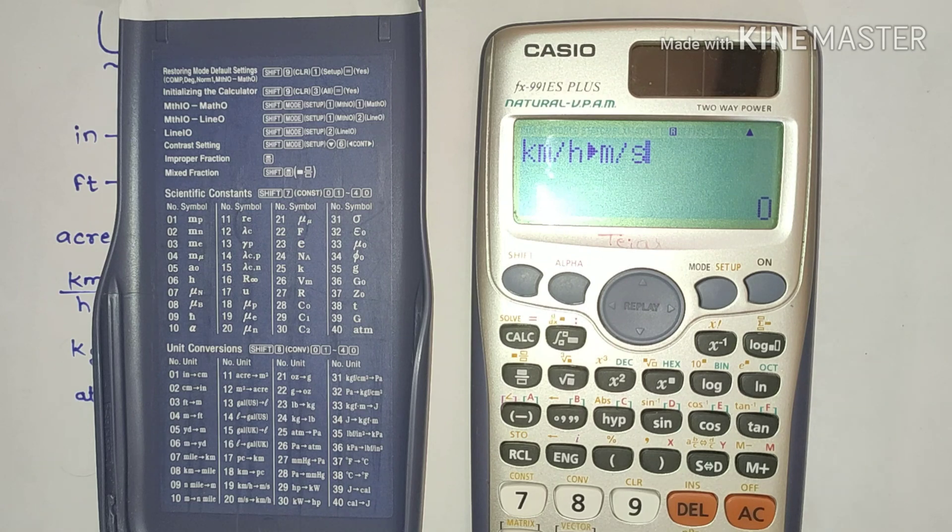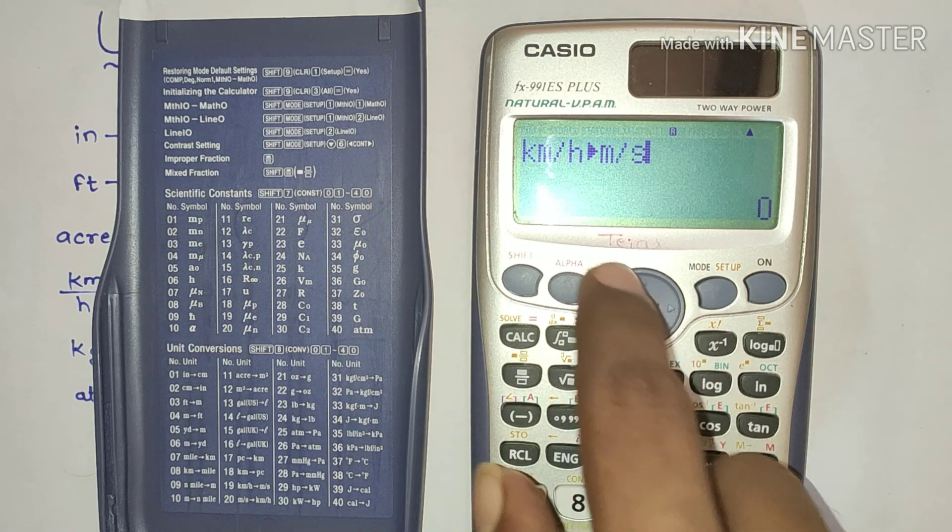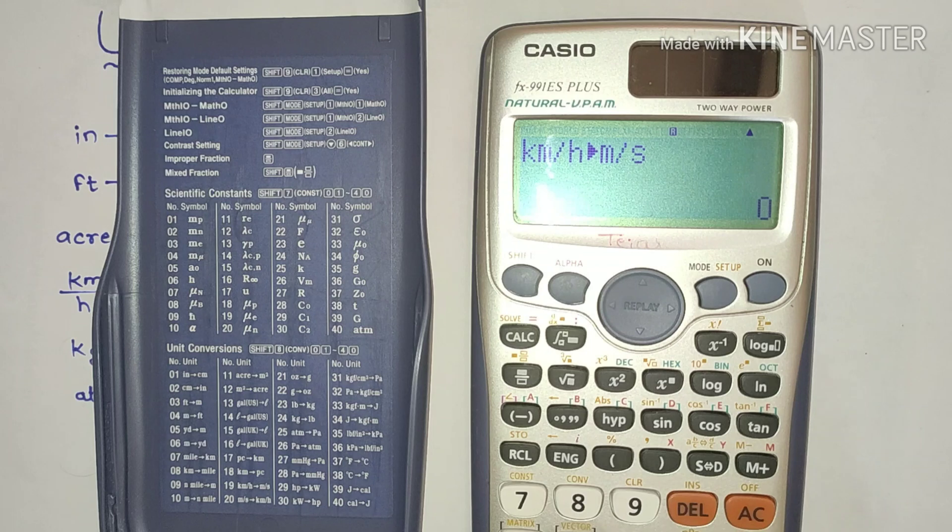I want to convert 50 kilometer per hour to meter per second. Put 50 kilometer per hour, now press the equal button. Here I got the value in meter per second: 13.88 meter per second.